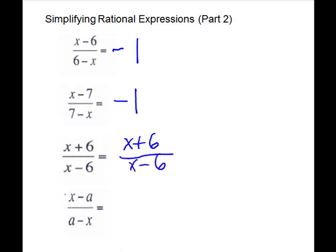For the fourth one, notice these are both minus and one of them is turned backwards. So let's just check. We have positive x, negative x, negative a, positive a. Those are opposites. That will be a negative 1.